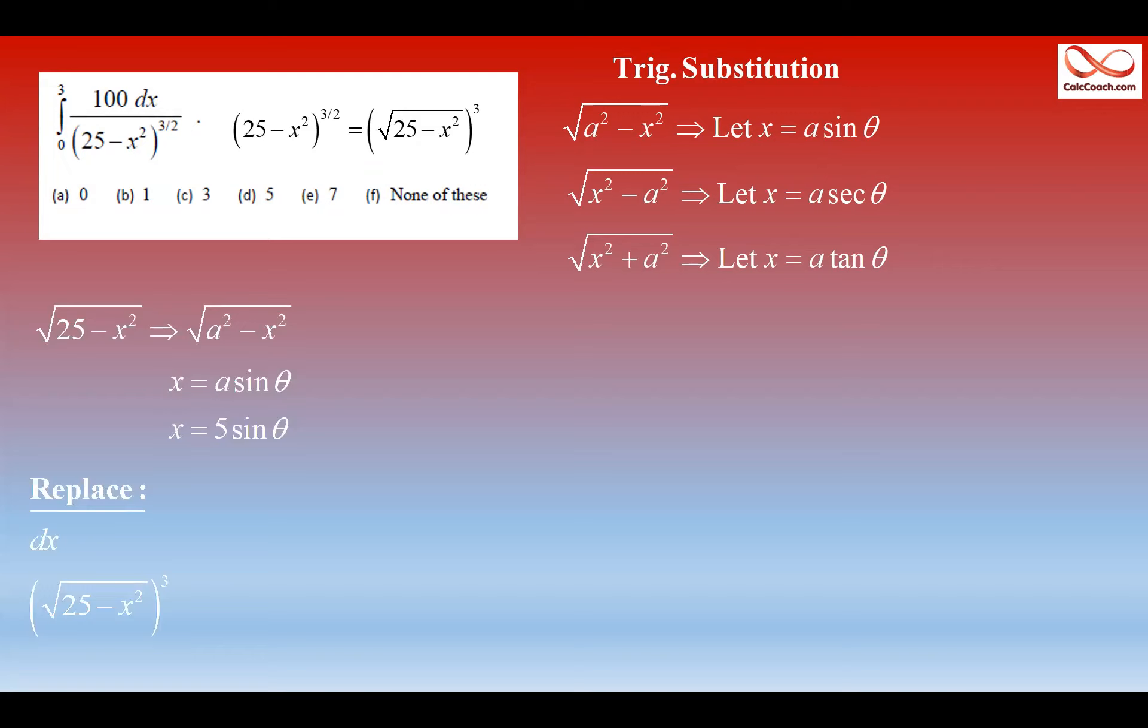Well, dx is the derivative, like when you do a u sub, you let u equal blah, then you do du. If you let x equal five sine theta, you do dx, the derivative of five sine theta, five cosine theta, officially d theta.